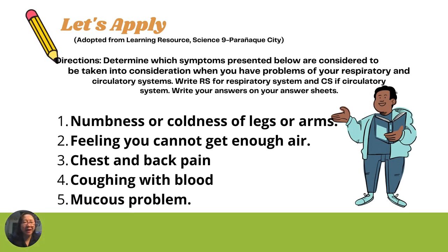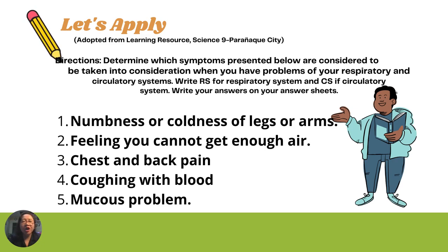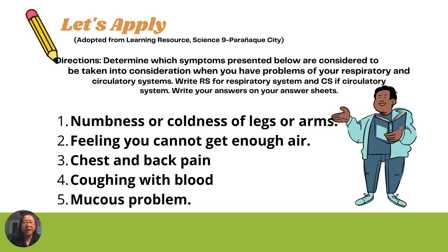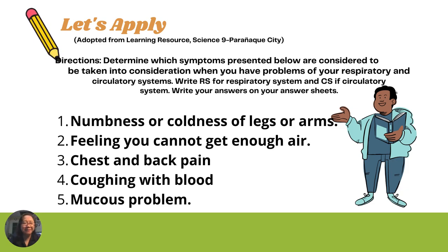For the Let's Apply part of your module, determine which symptoms presented below are to be considered when you have problems of your respiratory and circulatory systems. Write RS in your answer sheet for respiratory system and CS for circulatory system. Number 1: numbness or coldness of legs or arms. Number 2: feeling you cannot get enough air. Number 3: chest and back pain. Number 4: coughing with blood. Number 5: mucous problem.